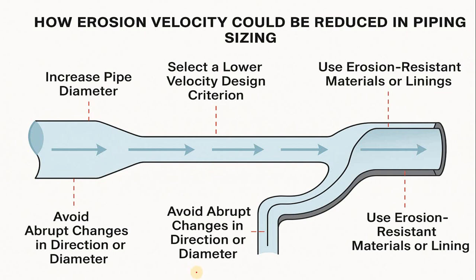Hi everyone. In today's video we are going to discuss how erosional velocity could be reduced in piping sizing — when you do the line sizing for gas phases, vapor, multi-phase systems, or two-phase systems. We will see what are the different methods by which you can reduce the erosional velocity and how. So let's start the video.